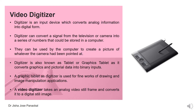The next one is the video digitizer. A digitizer is an input device which converts analog information into digital form. It can convert a signal from the television or camera into a series of numbers that could be stored in a computer, and this can be used to create a picture of whatever the camera had been pointed at. It is also known as a tablet or graphics tablet, as it converts graphics and pictorial data into binary inputs.